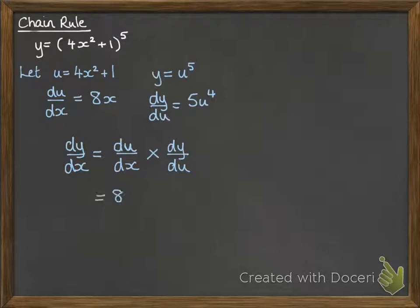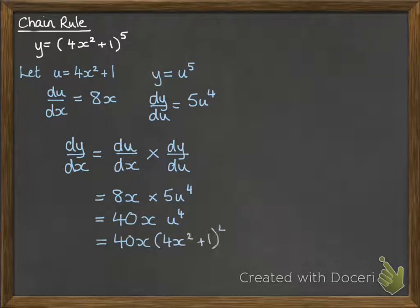Now we substitute in the things that we've just worked out. And at the end, we need to replace that u with x's again. So just take out that u in the last stage and put in the 4x squared plus 1.